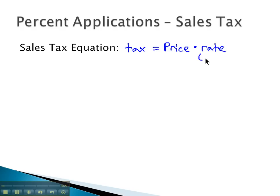It's important that we always put that rate as a decimal. In other words, converting the percent to a decimal by multiplying by 0.01. You'll often see this equation abbreviated T is equal to PR. Tax is equal to price times rate.